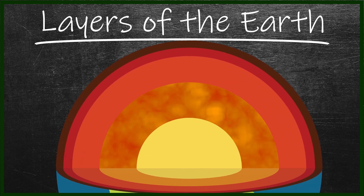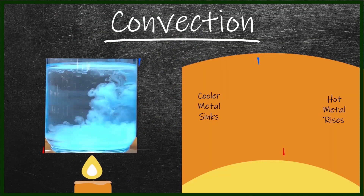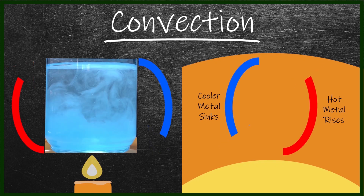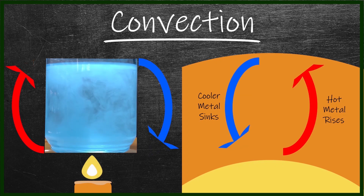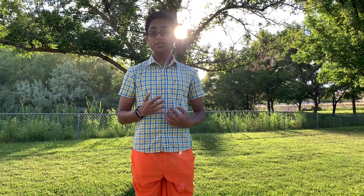These disturbances move the charged particles in the metal, creating a net magnetic field through a process called the geodynamo. The primary cause is convection — a cyclical movement of hot and cold substances that causes fluid motion. The inner core, which is as hot as the sun's surface, heats up the adjacent material in the outer core, which rises due to its lower density while the colder metal settles. This, along with Earth's rotation, creates constant cycles of moving metal throughout the outer core.